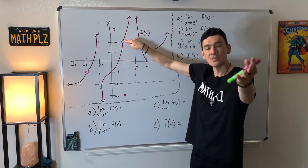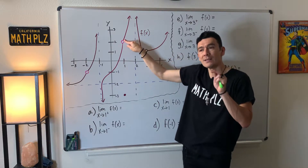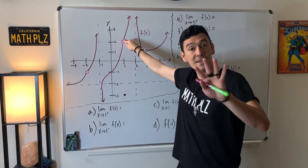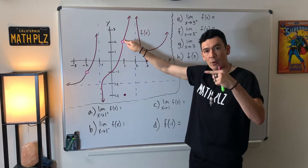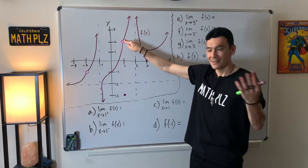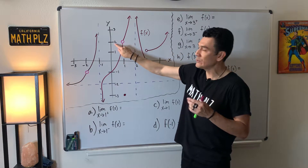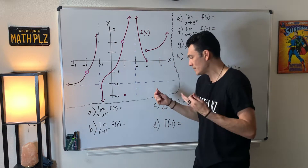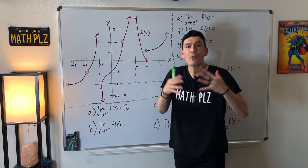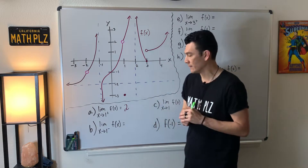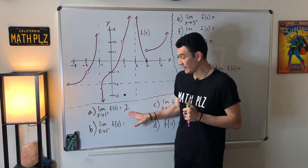I can get really close to one from the right-hand side even though there's a hole. So let's pick this point here, which has an x coordinate really close to one from the right. The approximate y coordinate here is really close to two, so the answer to part A is two.